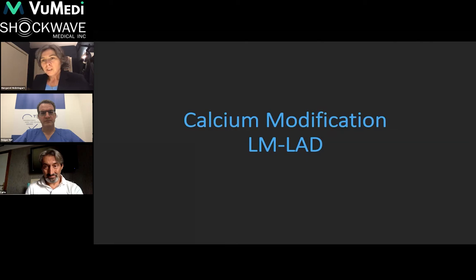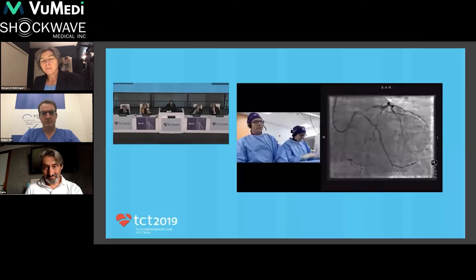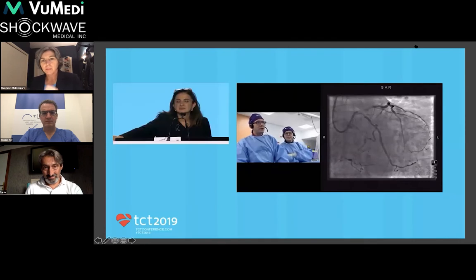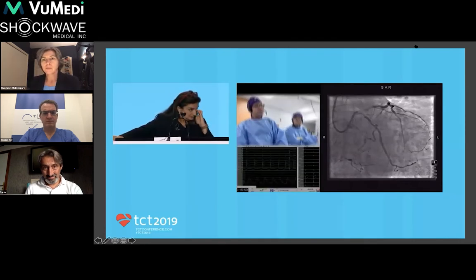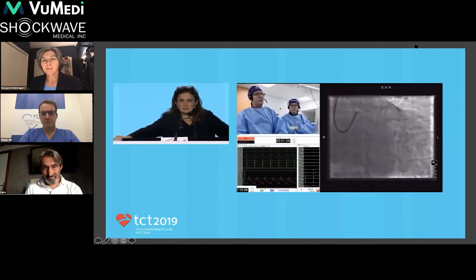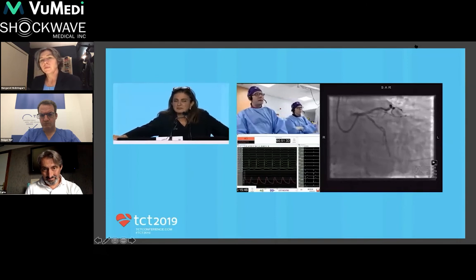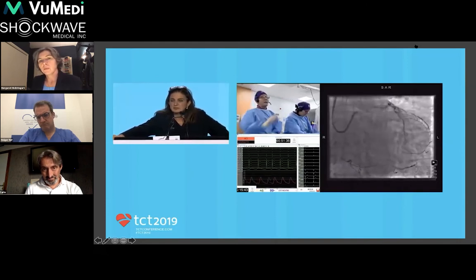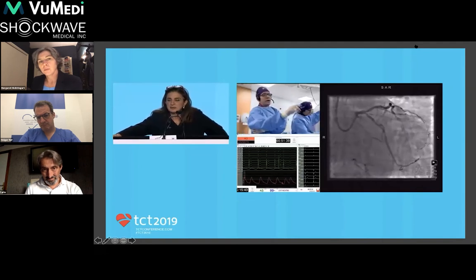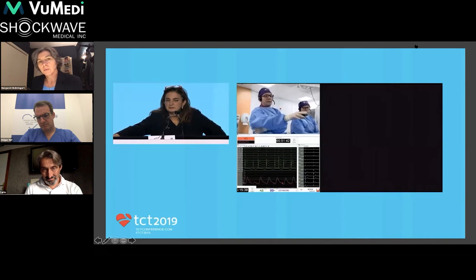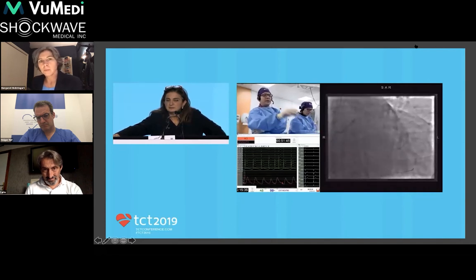The next clip shows IVL therapy delivery, starting with the LAD back into the left main. The panel has well described the challenges of this calcification — its distribution, nature, and eccentric character mean that rotablation might not offer the desired calcium modulation. The plan with IVL is to start distally in the LAD and deliver 10 to 20 therapies distally, 10 therapies in the mid-section, then concentrate the remaining therapies from the IVL balloon on the very proximal osteal segment using a 3.5mm lithotripsy balloon.